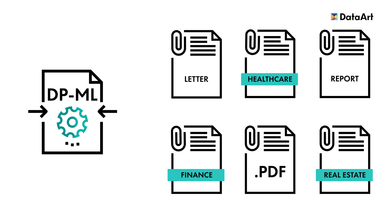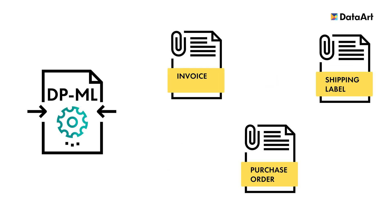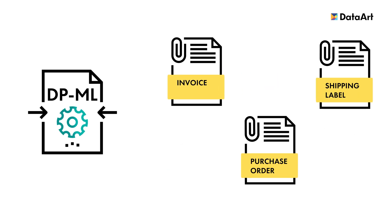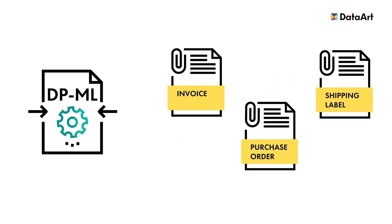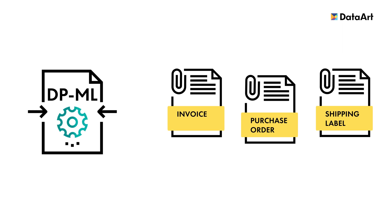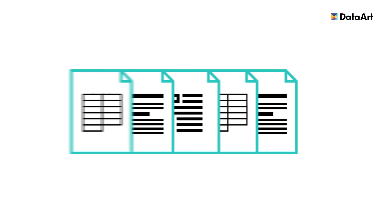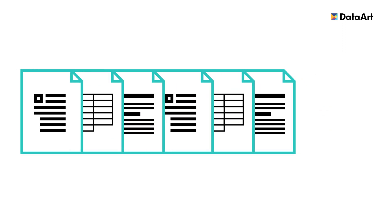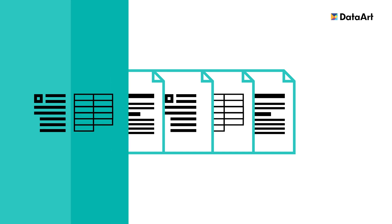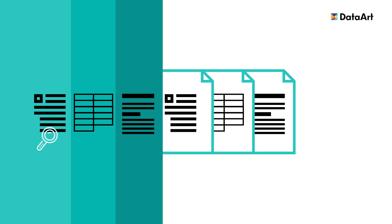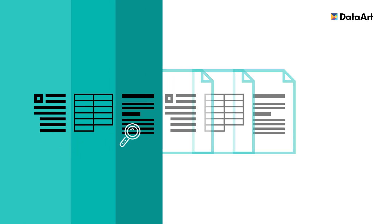It can classify documents based on their contents, such as identifying whether a document is an invoice, a purchase order, or a shipping label. DeepML automatically detects data like text, tables, and titles, and then extracts and classifies it into different groups.